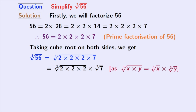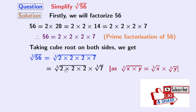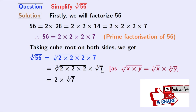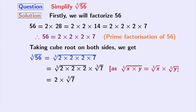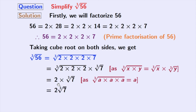Here, we have used the rule that cube root of x times y is equal to cube root of x times cube root of y, where x is 2 times 2 times 2 and y is 7. Now, from the first cube root we get 2, and the second cube root — that is cube root of 7 — remains the same. In the first cube root, we have used the rule that cube root of a times a times a is equal to a, where a is 2. After simplification, we get 2 cube root of 7 as our final answer.